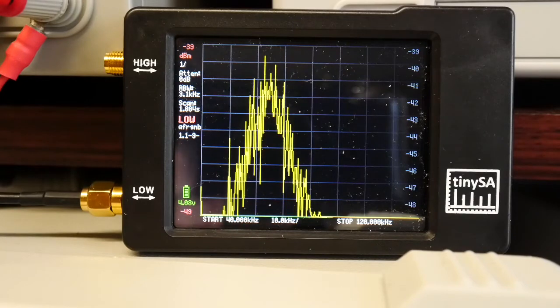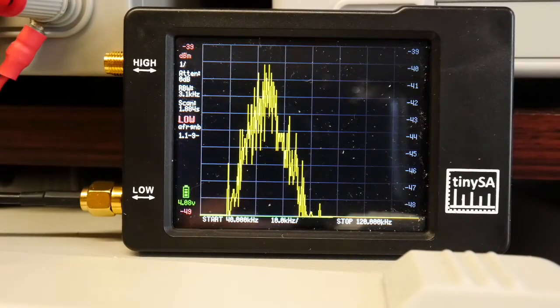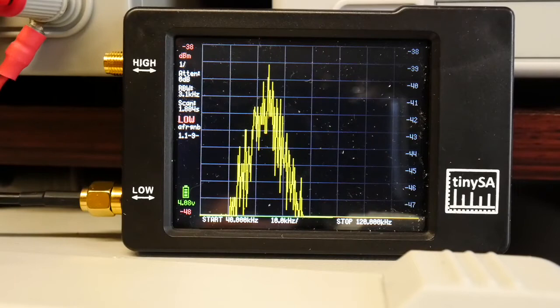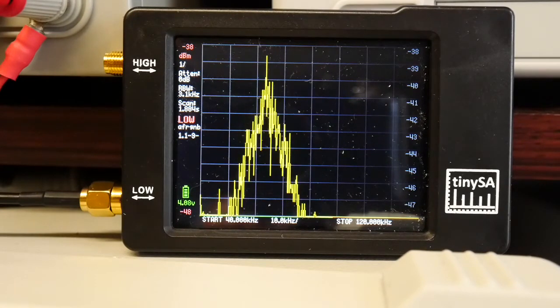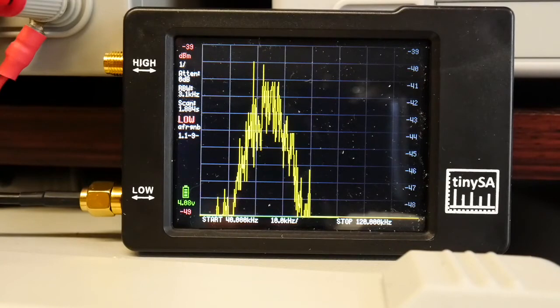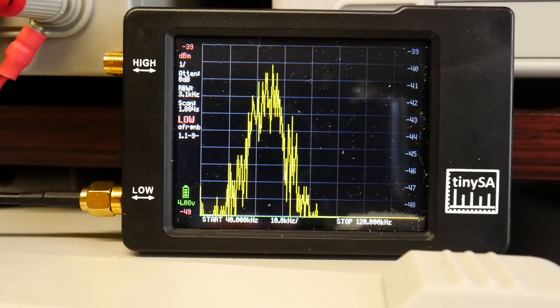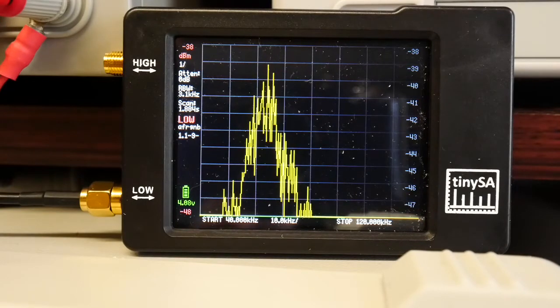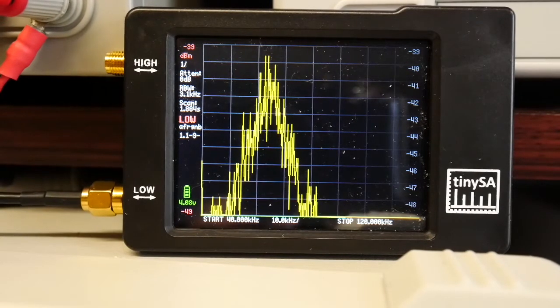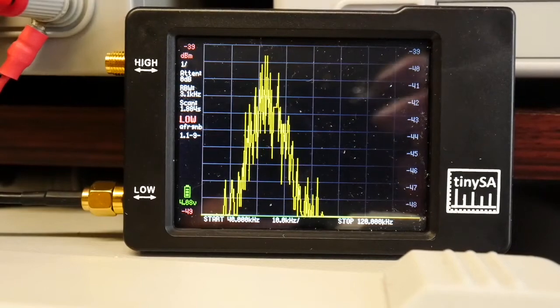And that's back again. So we've probably gone about three divisions or so on there, which is 10 kilohertz a division. So that would make sense, the scope was saying about 27 kilohertz and the TinySA is giving us a similar result. So that's a spectrum analyzer displaying the same response curve.